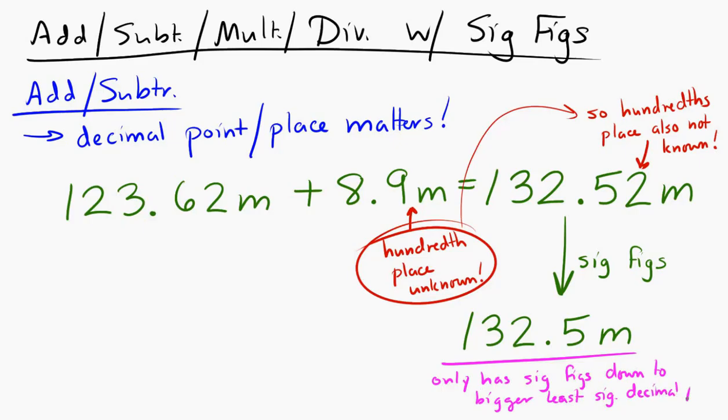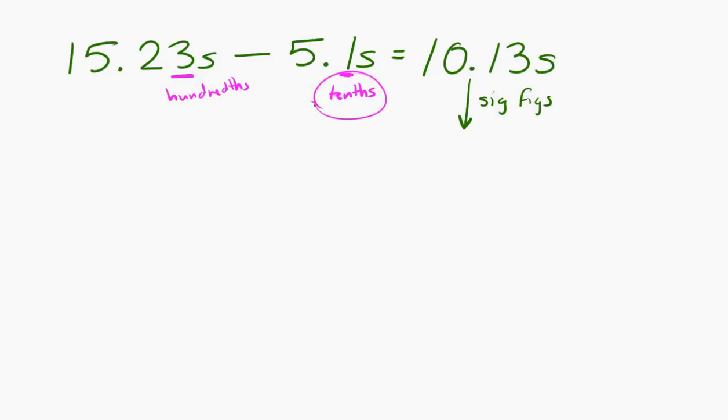Let's see if we can make some sense of that. So let's see if we have 15.3 seconds and we subtract 5.1 seconds. Well, if we just do it in a calculator, that's 10.13 seconds. However, the least significant decimal place in the first number is the hundredths place. And in the second number, it's the tenths place. Well, the tenths is bigger. So our result can only have significant digits down to the tenths place.